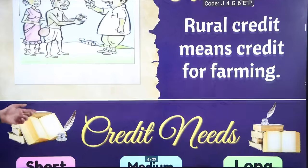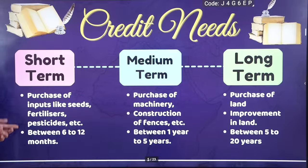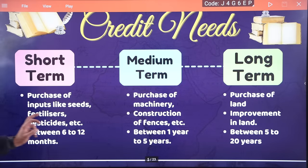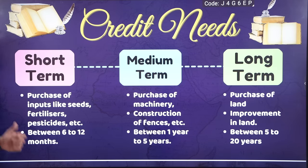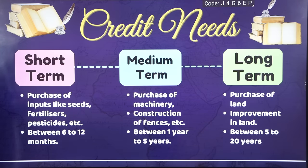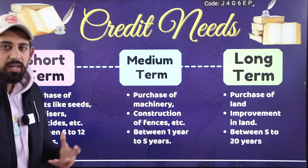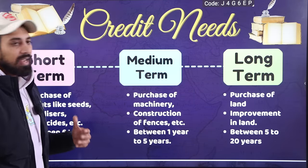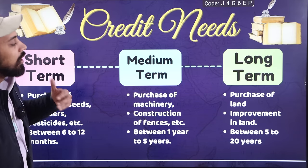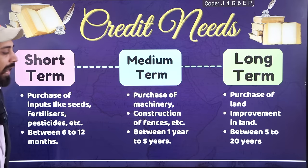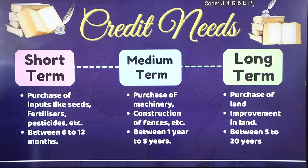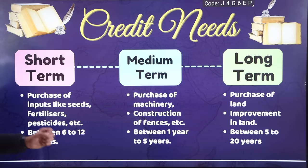Rural credit means credit for farming. Credit has three kinds of needs: short term, medium term, and long term. Short term is when a farmer takes a loan for seeds, fertilizer, and pesticides — lasting 6 to 12 months. Medium term is for equipment purchases. Long term is for purchase of land and improvement on land.